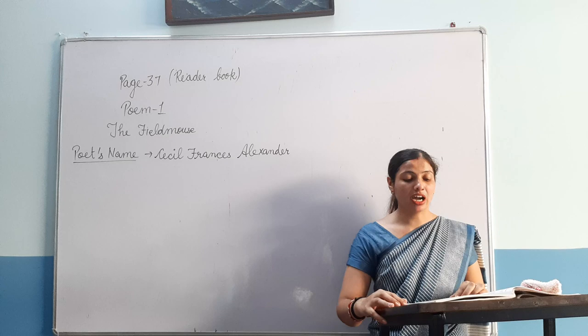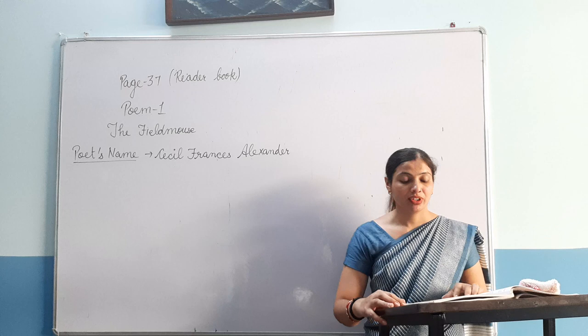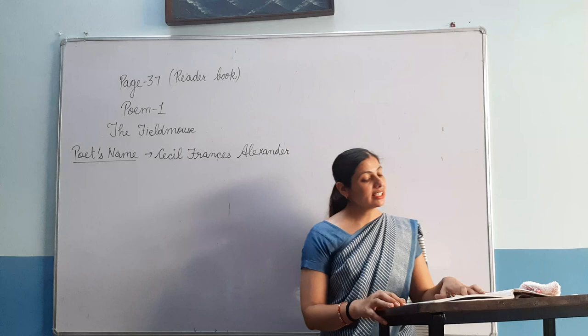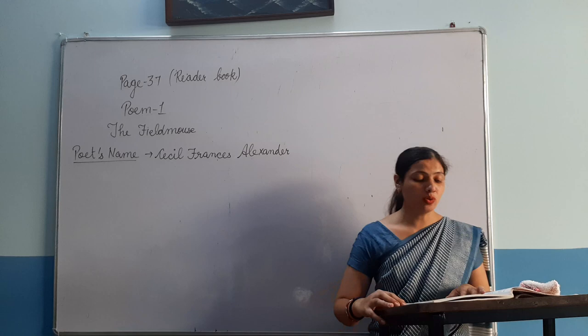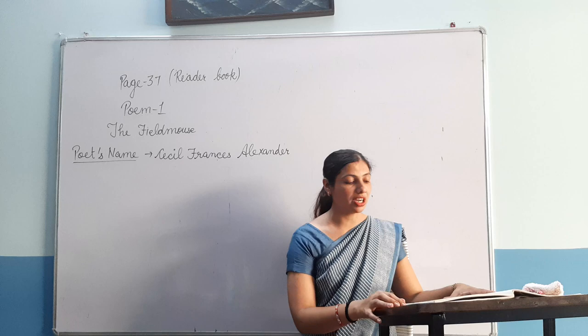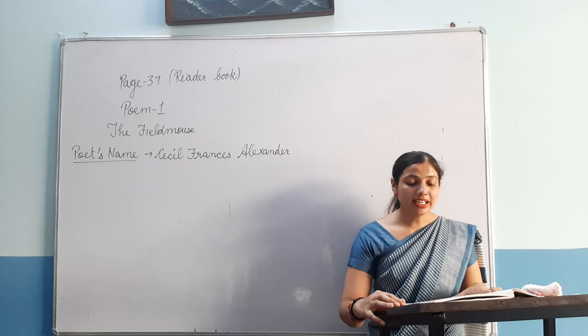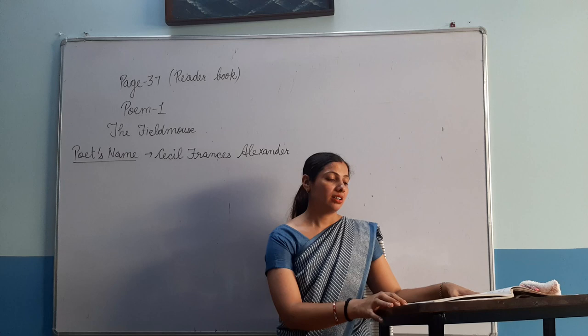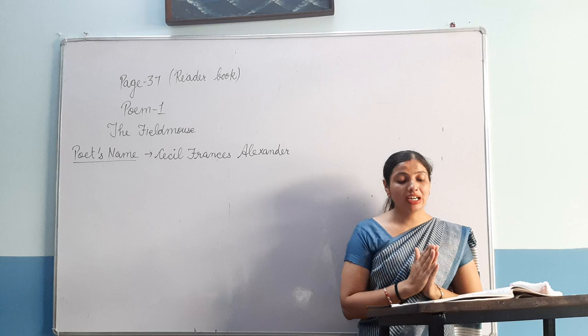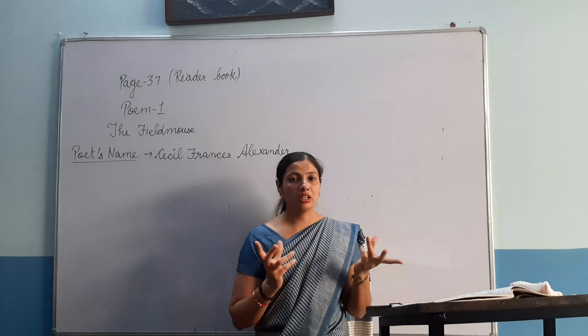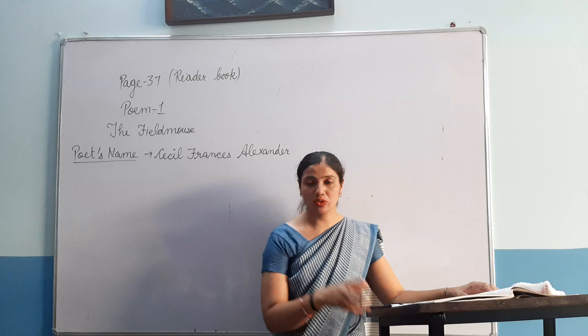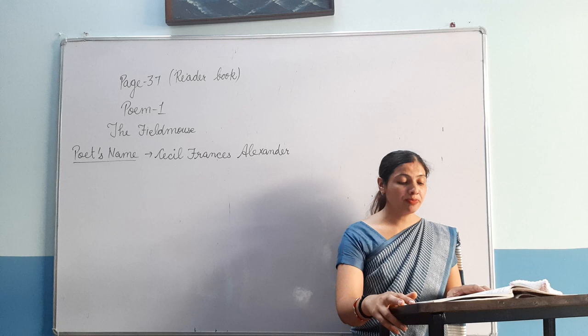In the third line the poet is describing the mouse — 'with your fur so soft and brown.' The mouse's fur is so soft and the colour is brown. 'With your eyes so round and merry' — merry means full of happiness. 'Scarcely moving the long grass' — scarcely means rarely, very less. So in the long grass you can see the mouse passing through. In the first stanza, the poet is telling us what the mouse looks like: fur is soft and brown, and the eyes are round and merry.